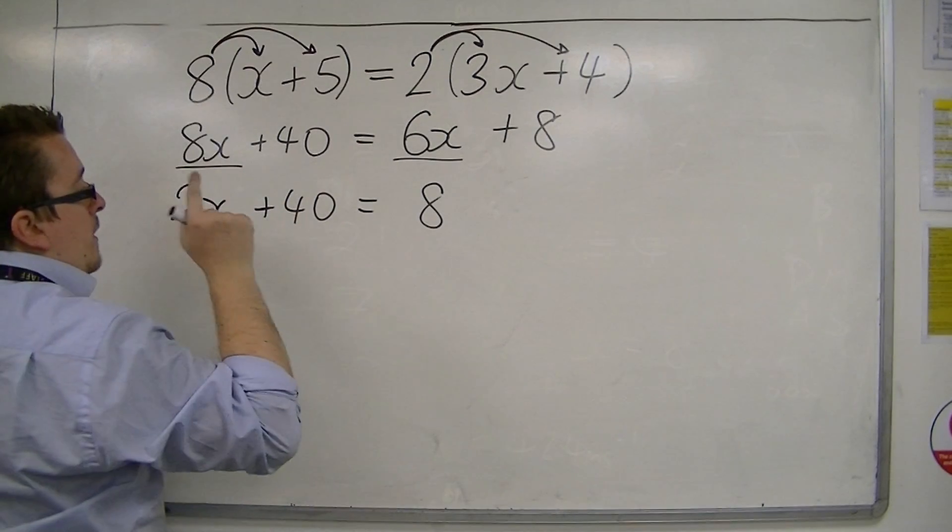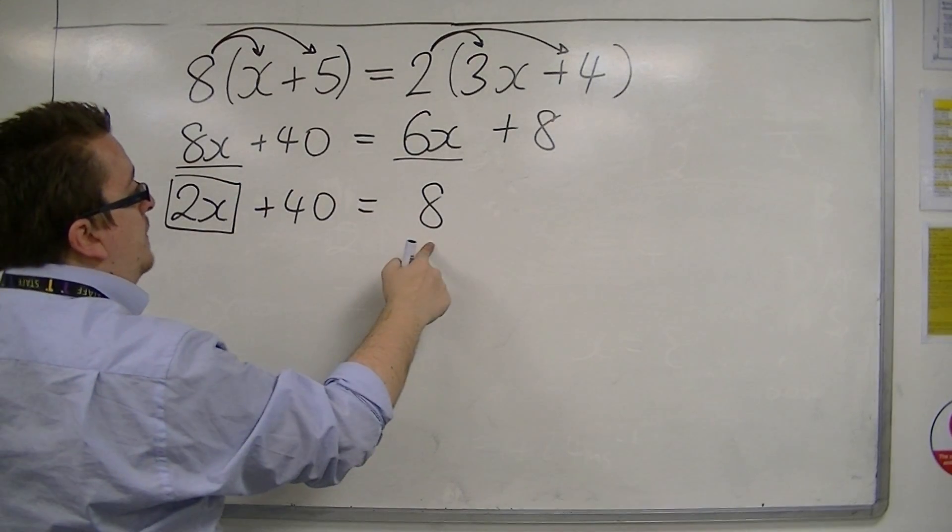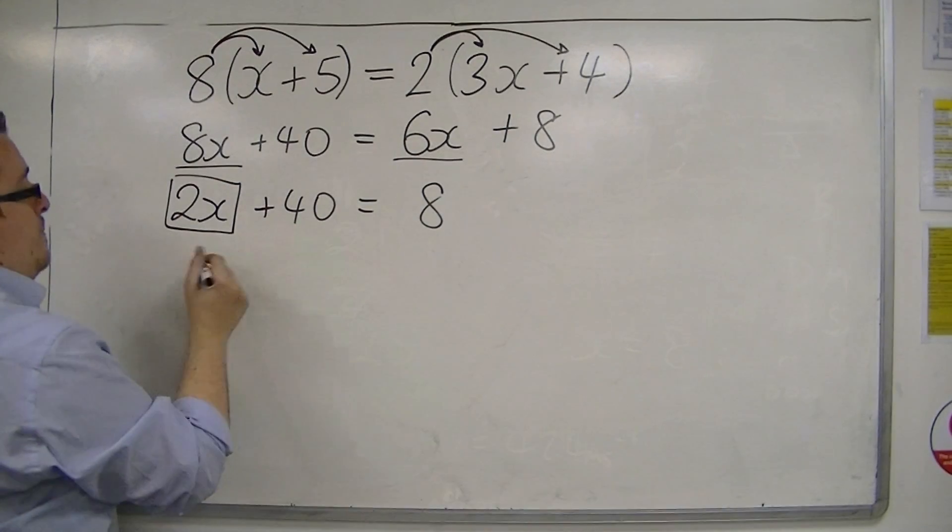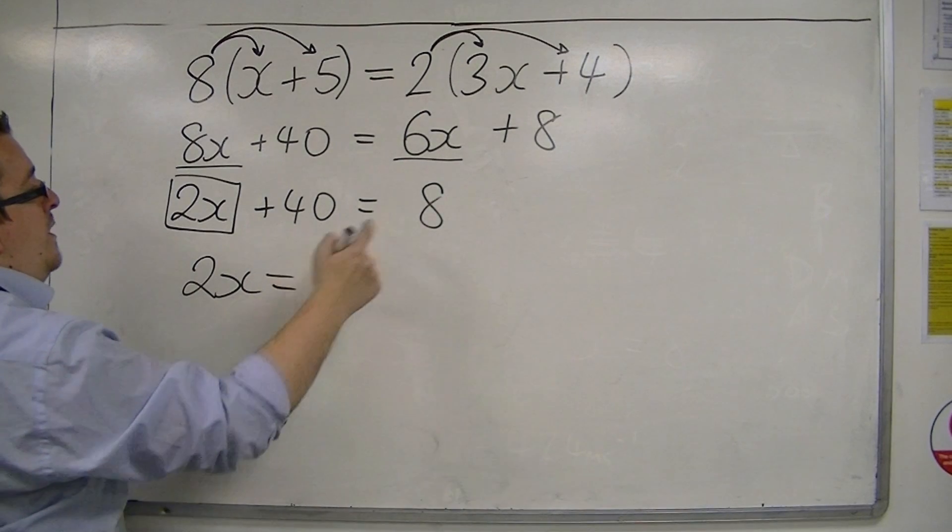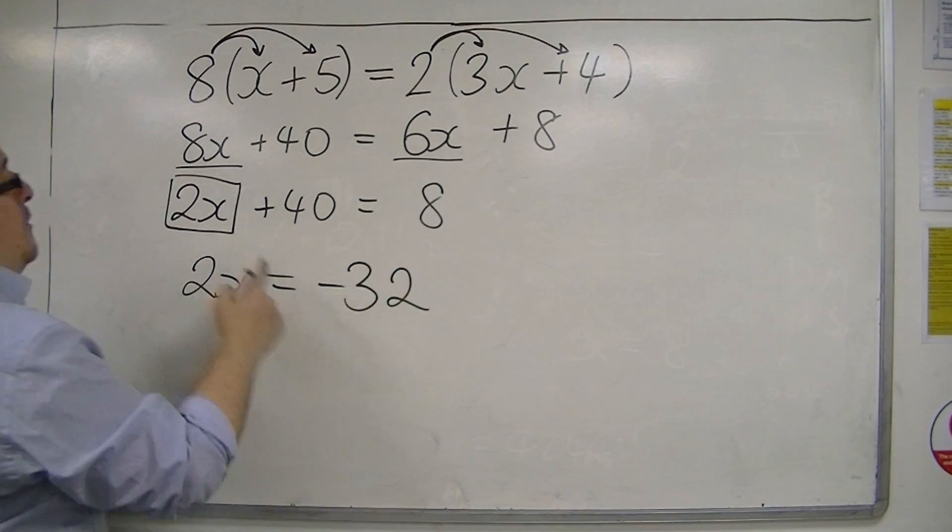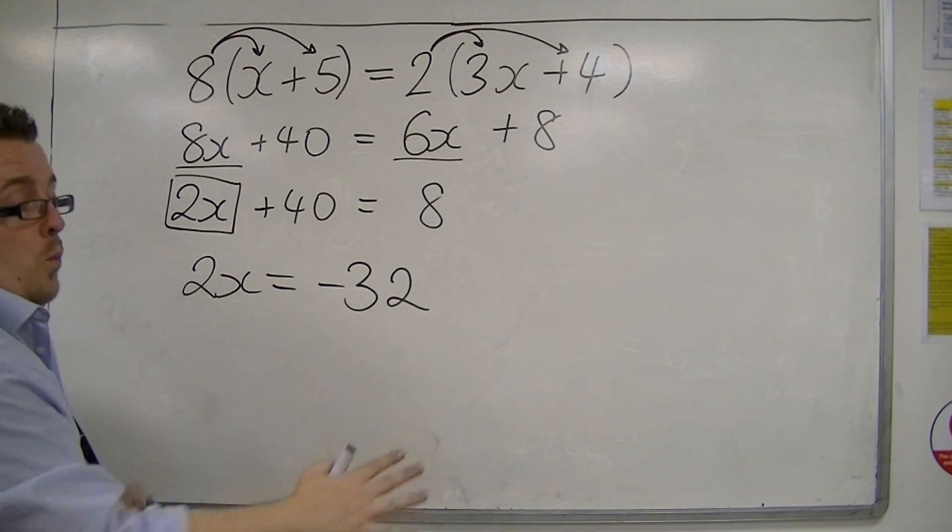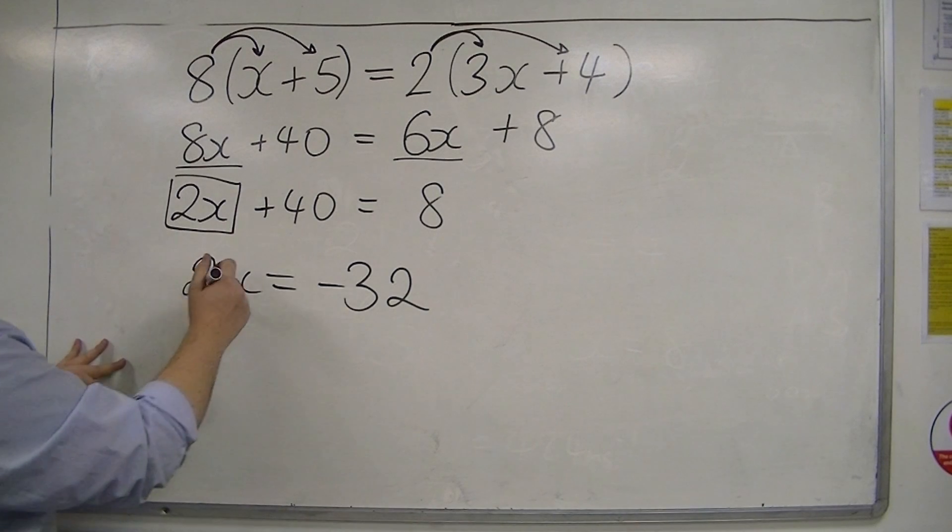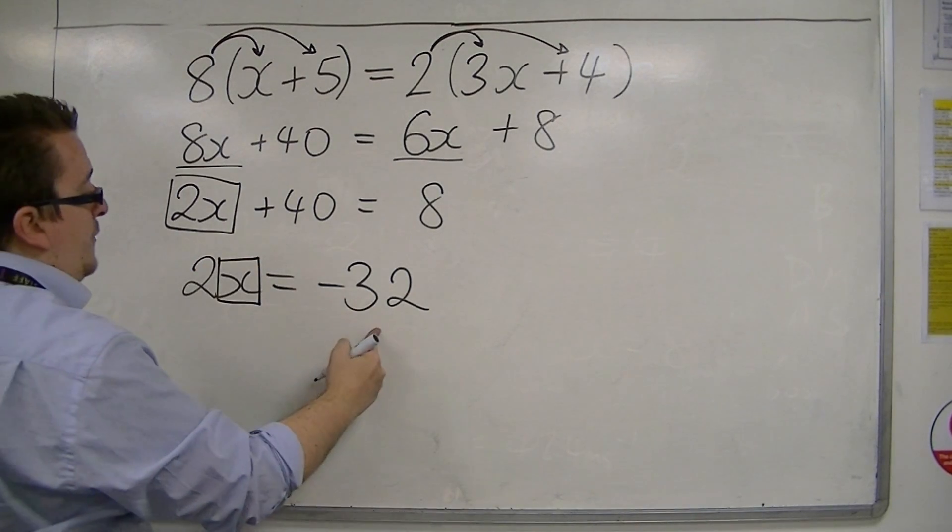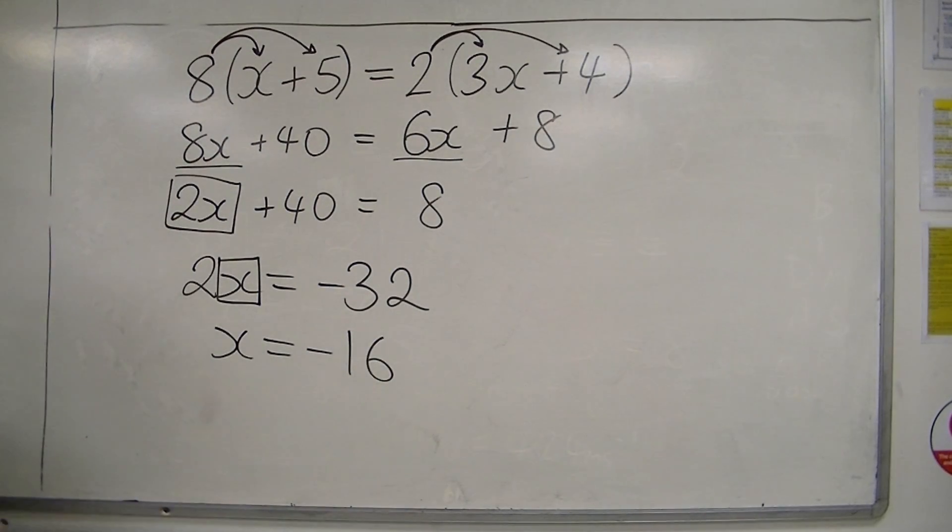So now, I've got this something plus 40 is 8. So I can subtract 40 from both sides, and get left with, well, 8 take away 40 is minus 32. So minus 32 plus 40 is 8. This is now a one-step equation. 2 lots of something is minus 32, so the something must be minus 16. 2 lots of minus 16 is minus 32.